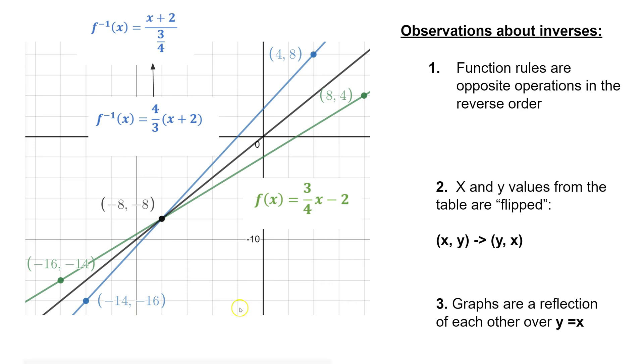And if you think back to math 2, a rule like this for a transformation, x, y becomes y, x, that was the rule that we used back in math 2 for a reflection over the line y equals x. So you can see that the blue line and the green line are reflections of each other over the line y equals x.